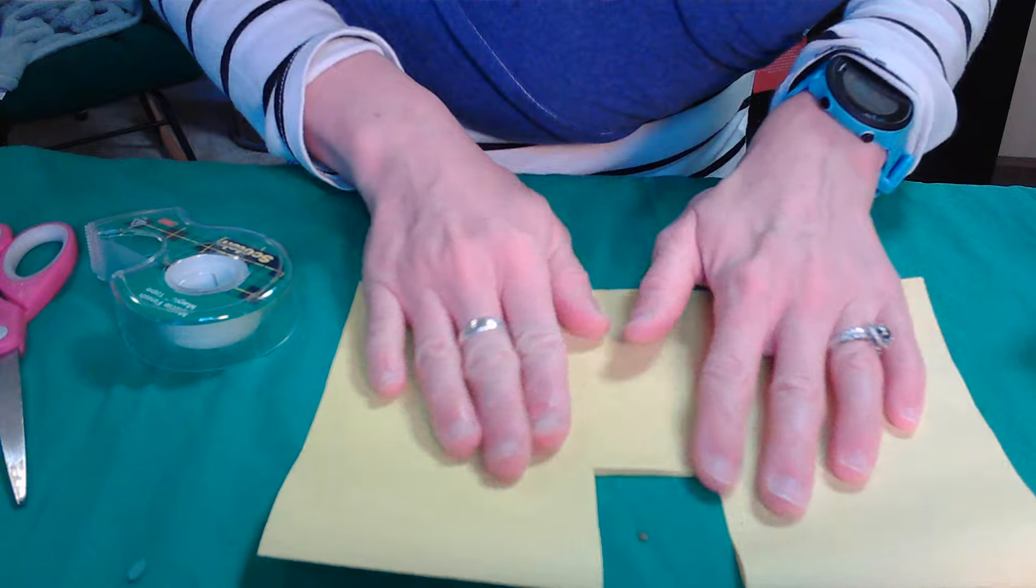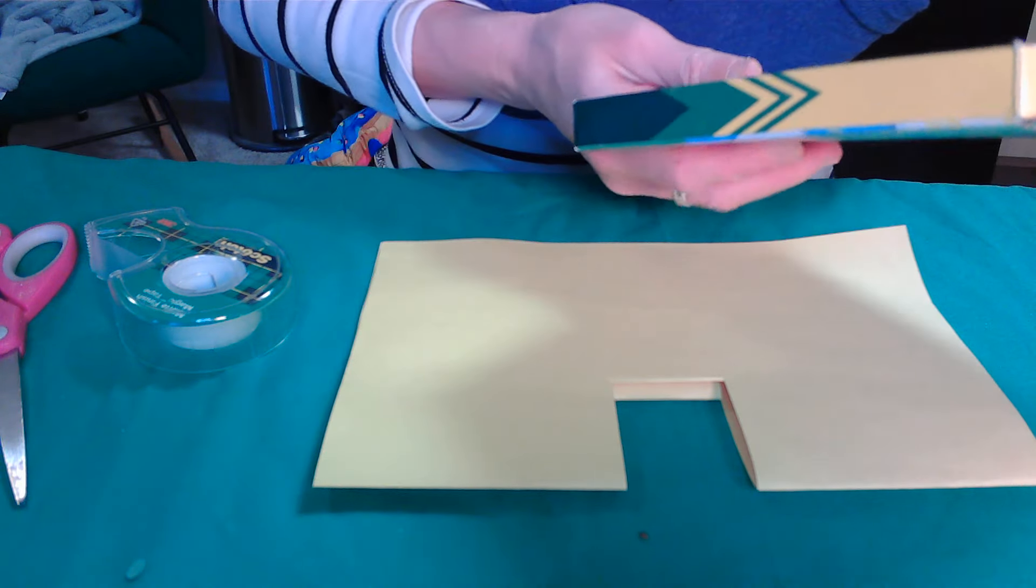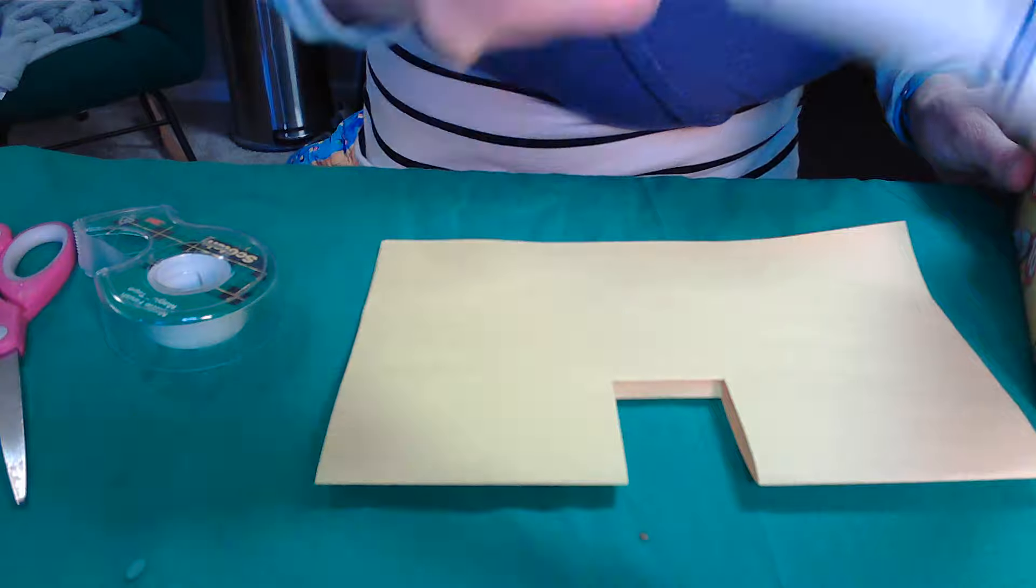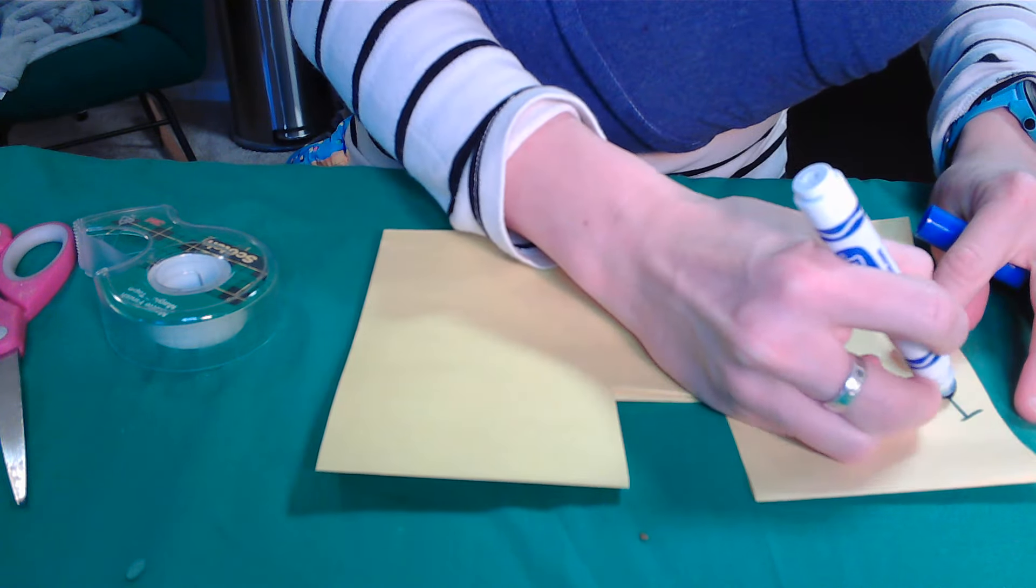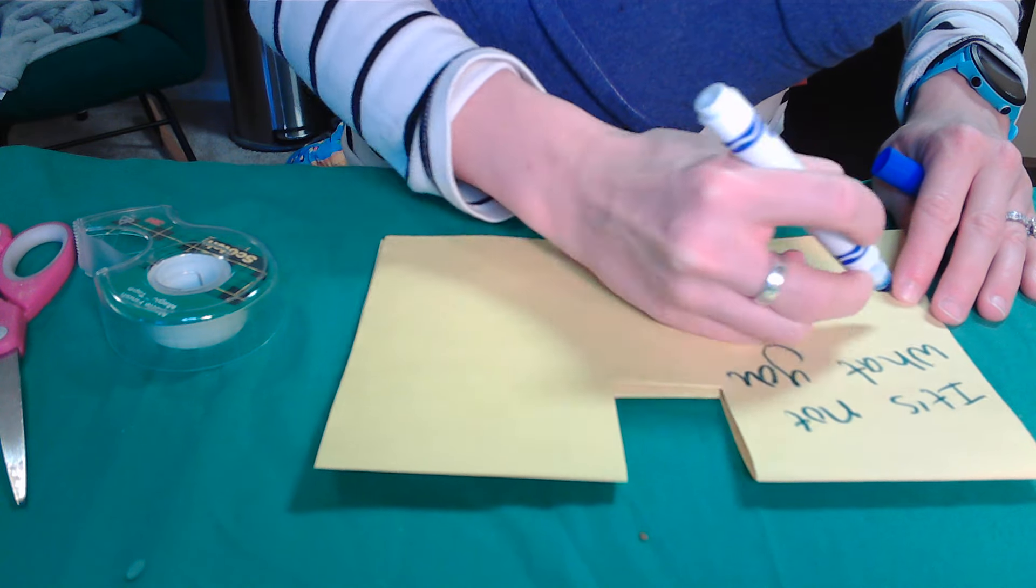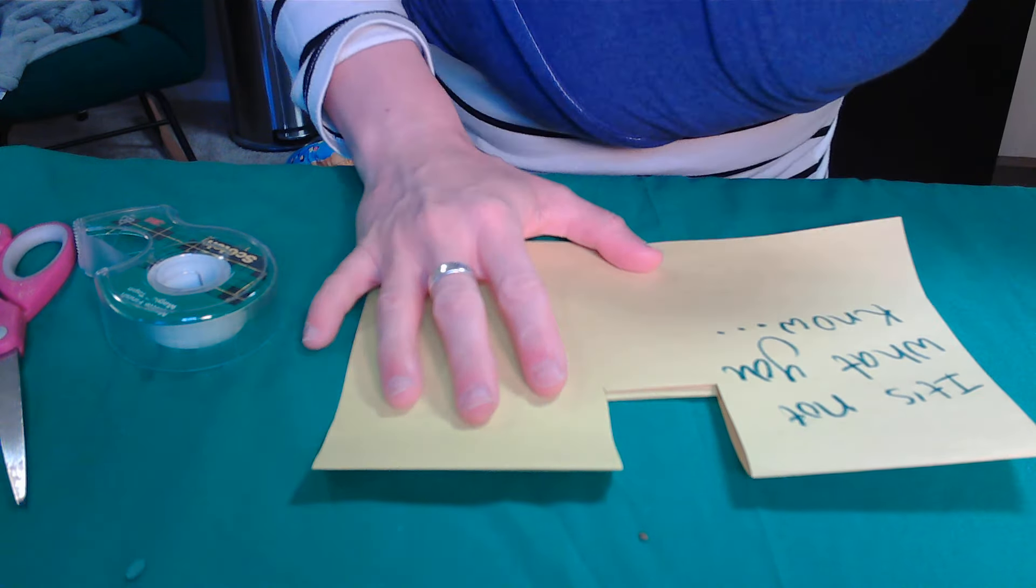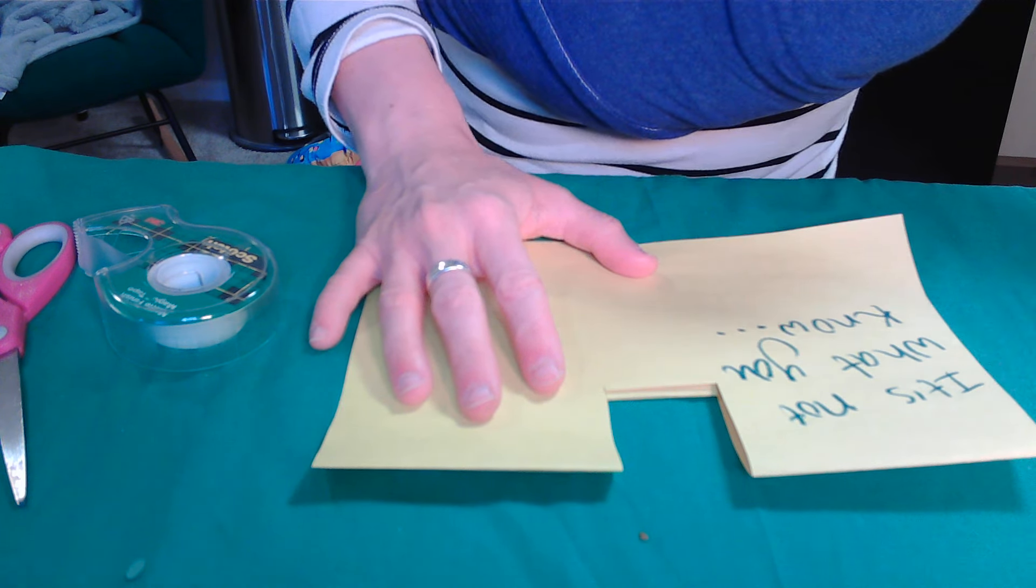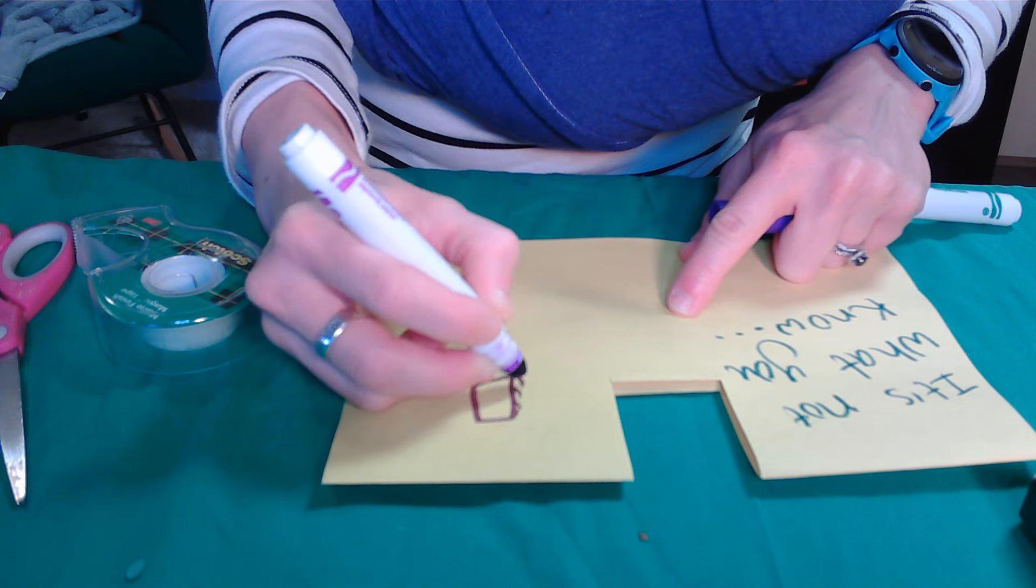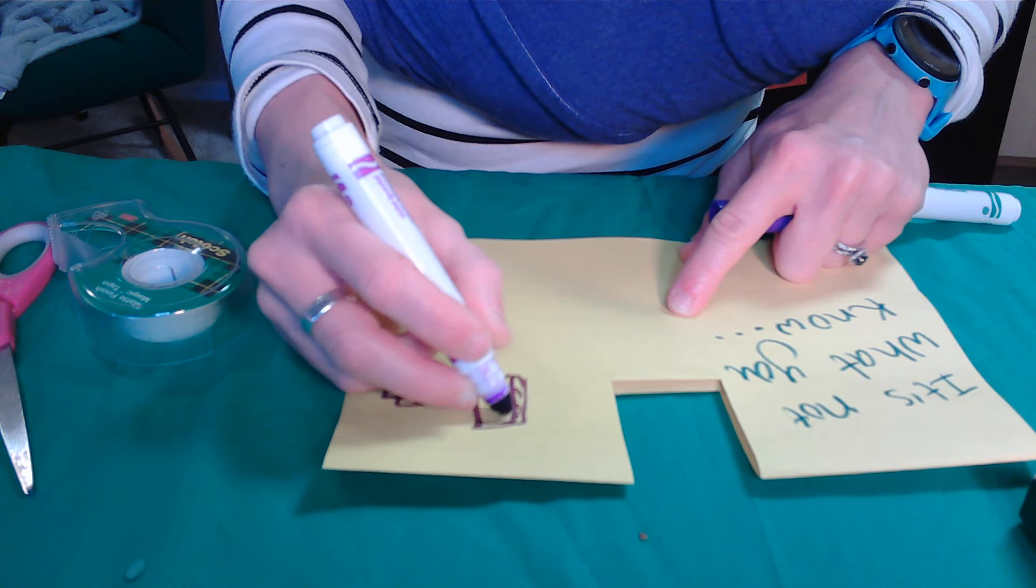Now this could be something that perhaps you give to someone, or it could simply be a fun decorative reminder of this lesson. So we're going to, on the outside, write it's not what you know. And then we're going to decorate this with some academic themed kind of stuff. So maybe I'll put something, maybe I'll have a book, or even a stack of books here. This is, I'm going to pretend this is my books.